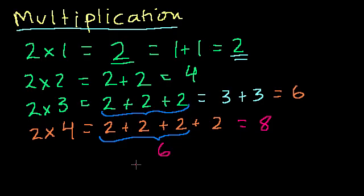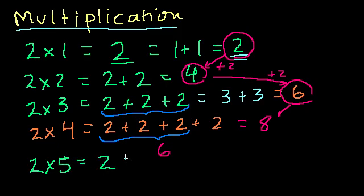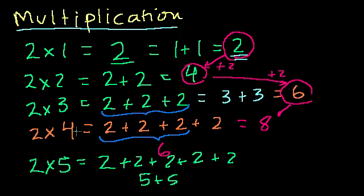You should see the pattern. As we go from 2 times 1 to 2 times 2 to 2 times 3, how much are we going up by? From 2 to 4, we're going plus 2. From 4 to 6, plus 2. From 6 to 8, plus 2. So 2 times 5 equals 2 plus 2 plus 2 plus 2 plus 2, or 5 plus 5, and it's going to be 2 more than 2 times 4, so it's 10.